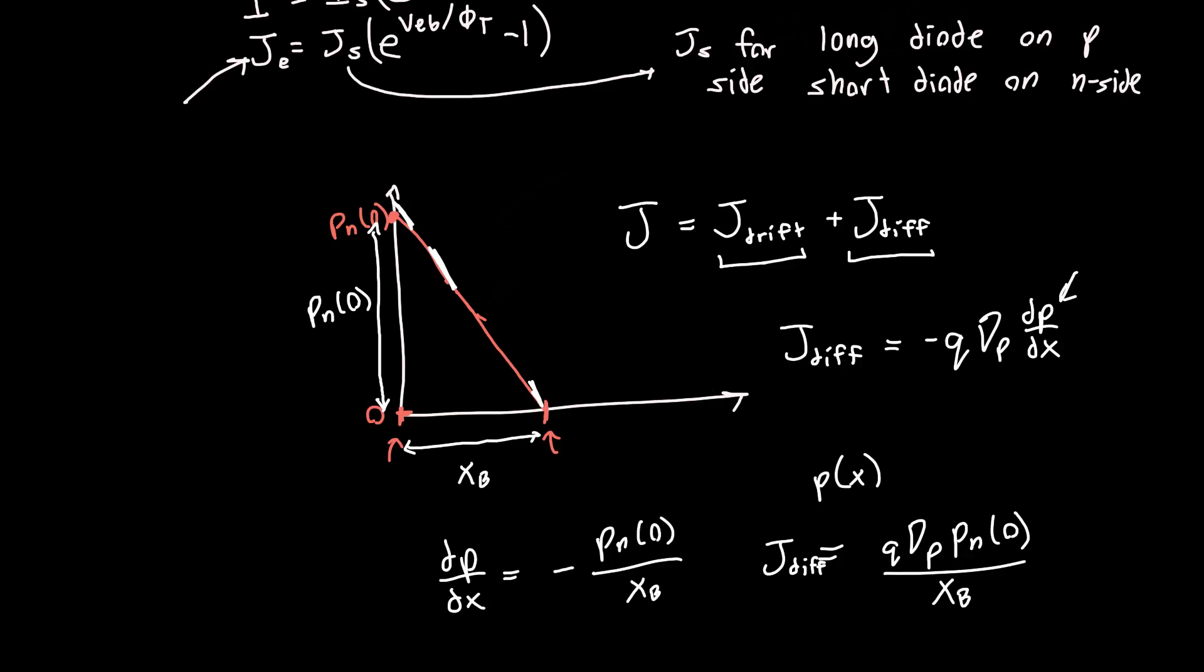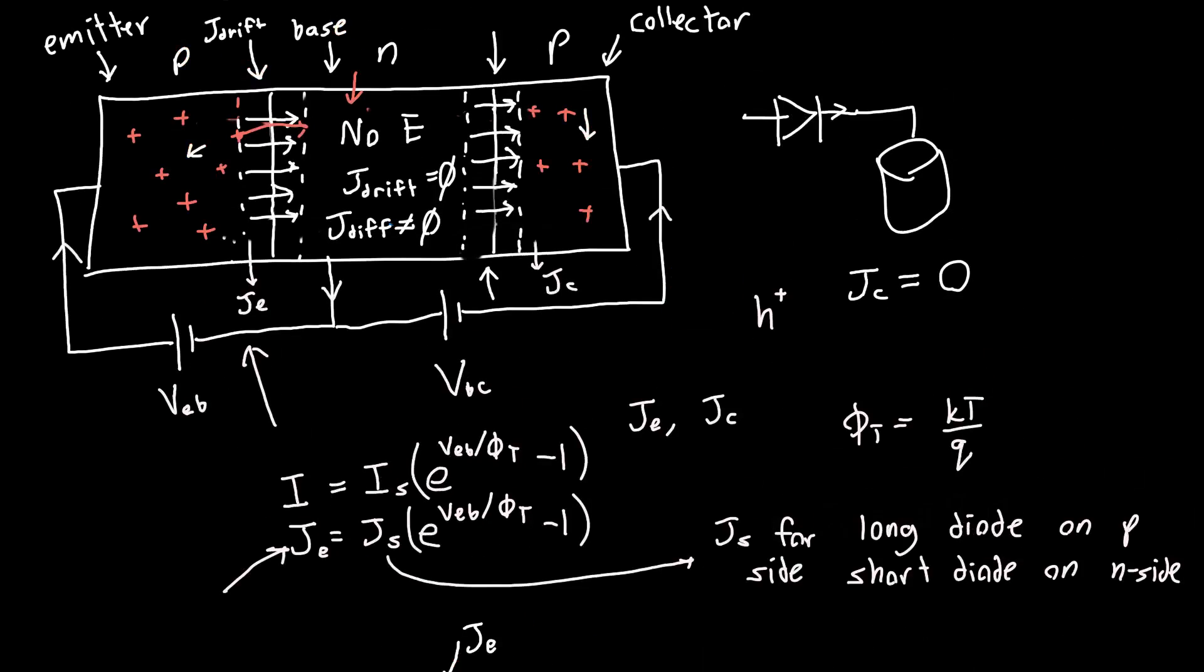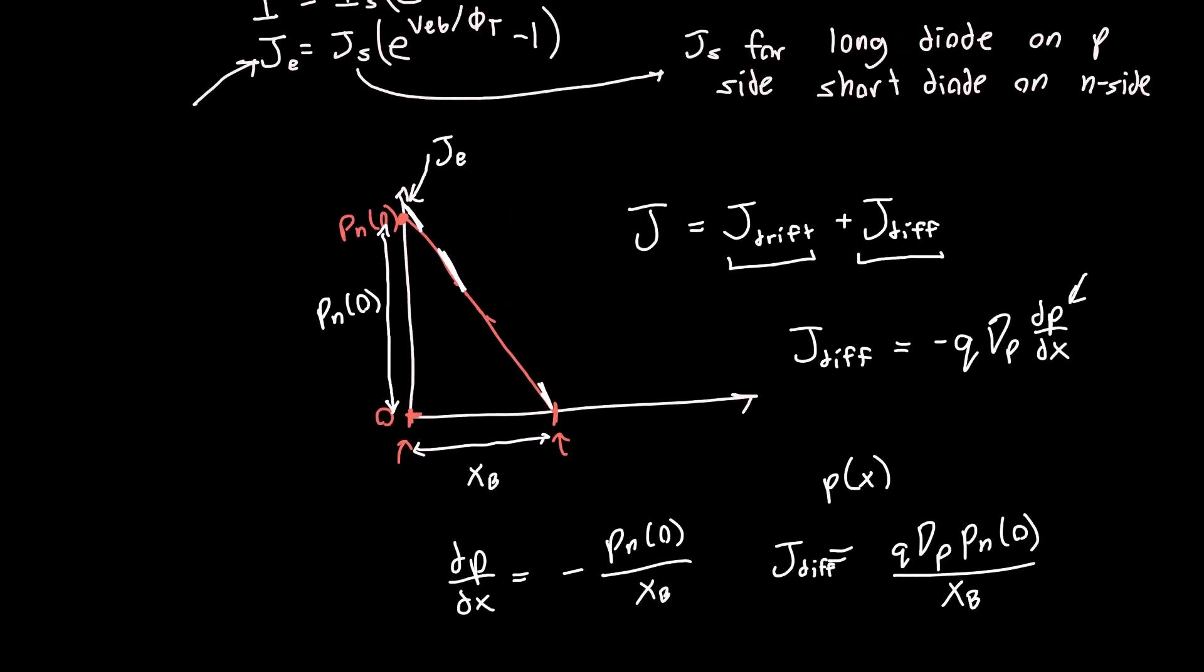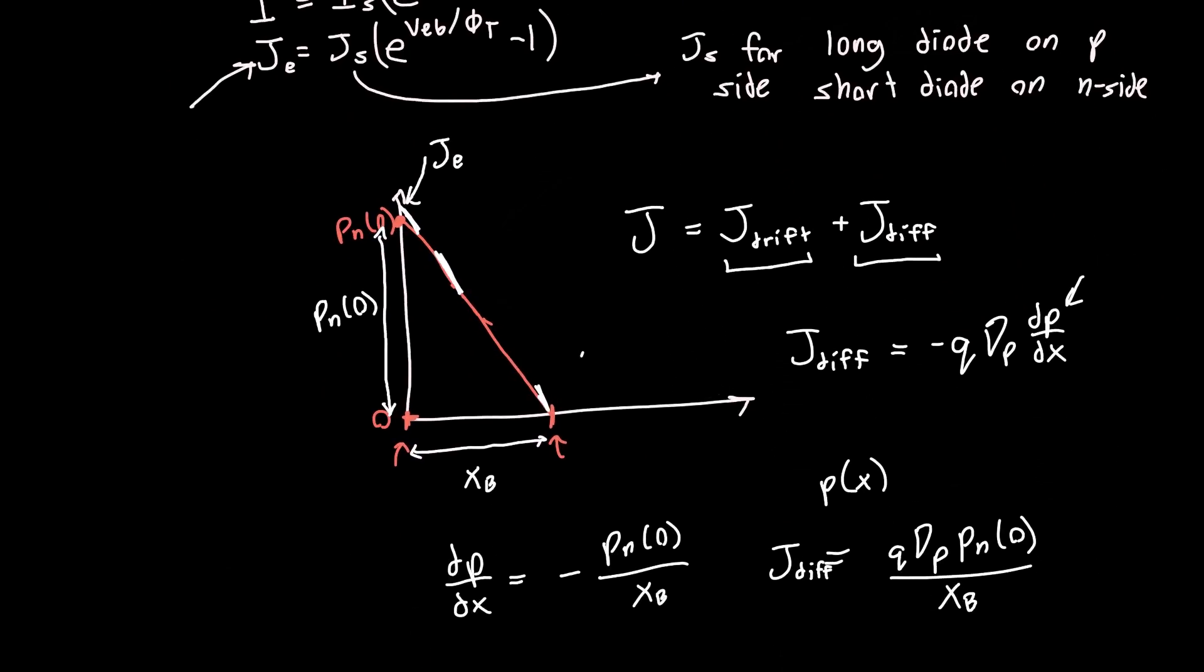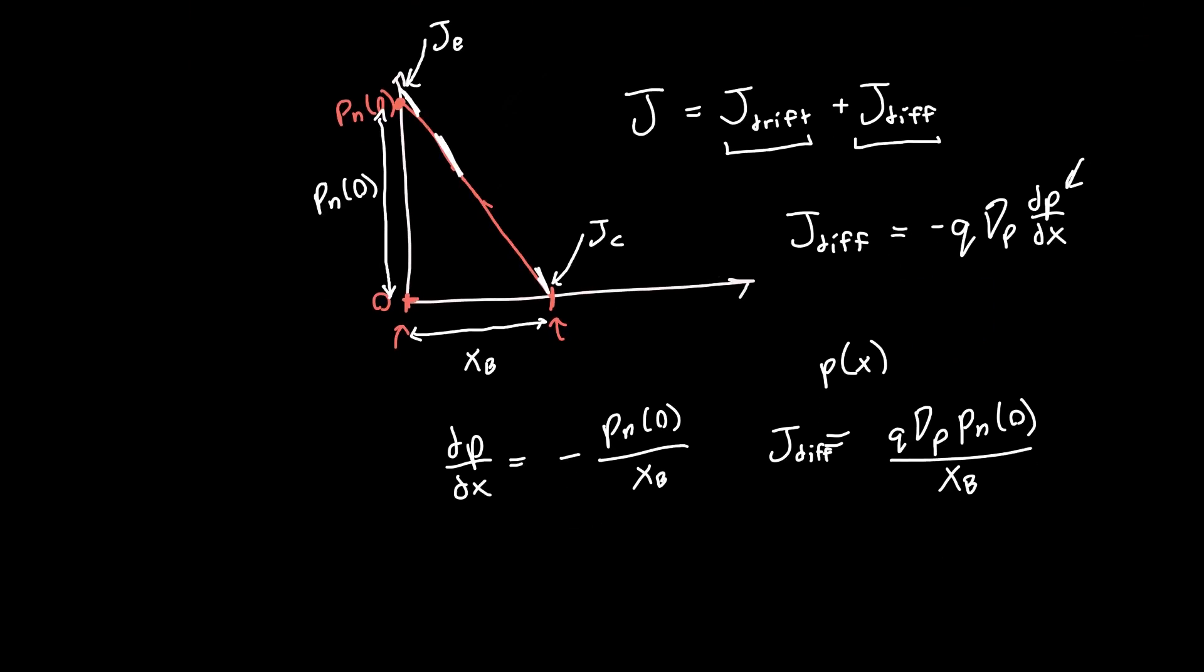So our diffusion current is just equal to Q DP times Pn of 0 divided by XB. That's our diffusion current, and that's the diffusion current everywhere in the base. The diffusion current right here, right at this edge, this is JE, the emitter current. If we assume that no holes are lost in this left-hand depletion region, every hole that crosses this depletion region is going to make it into the base. Similarly, this is the collector current JC. So if this is indeed a straight line, then JE is just equal to JC.